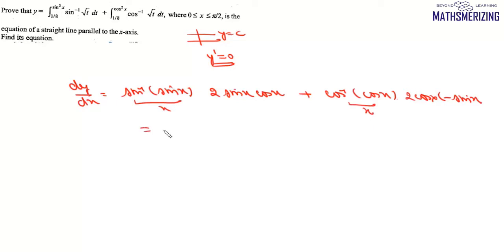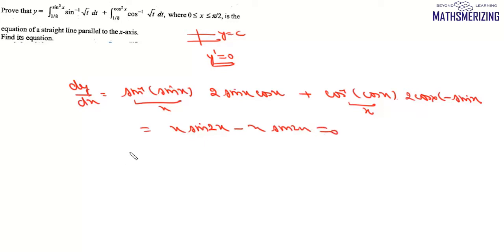So we'll get this as x into sin 2x minus x into sin 2x, which is 0. So that means for this function dy/dx is 0. And if dy/dx is 0, it is a constant function.